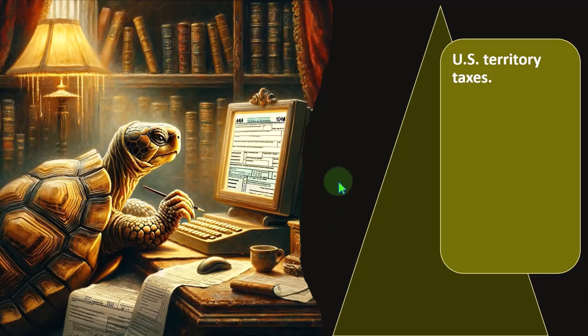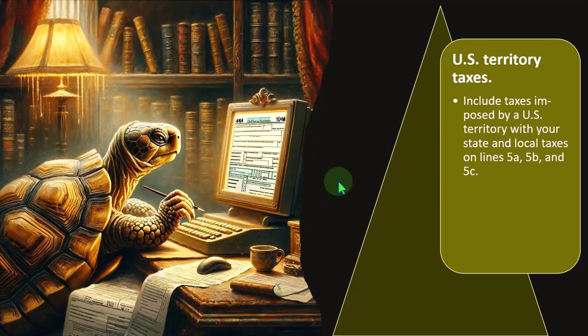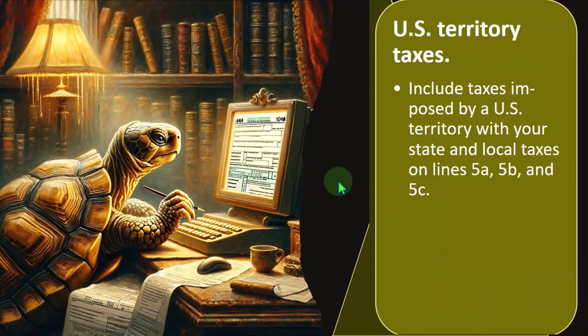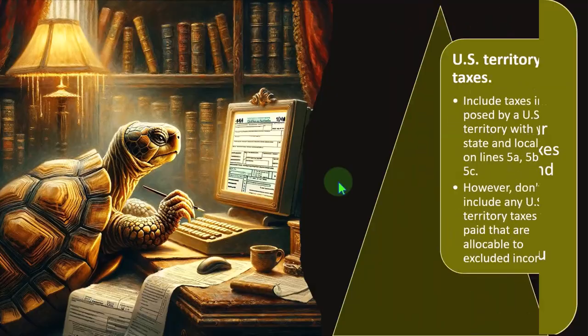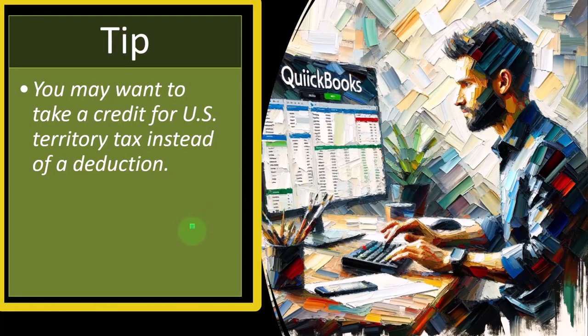U.S. territory taxes: include taxes imposed by a U.S. territory with your state and local taxes on line 5A, 5B, or 5C. However, don't include any U.S. territory taxes you paid that are allocable to included income. Tip: you may want to take a credit for U.S. territory tax instead of a deduction.